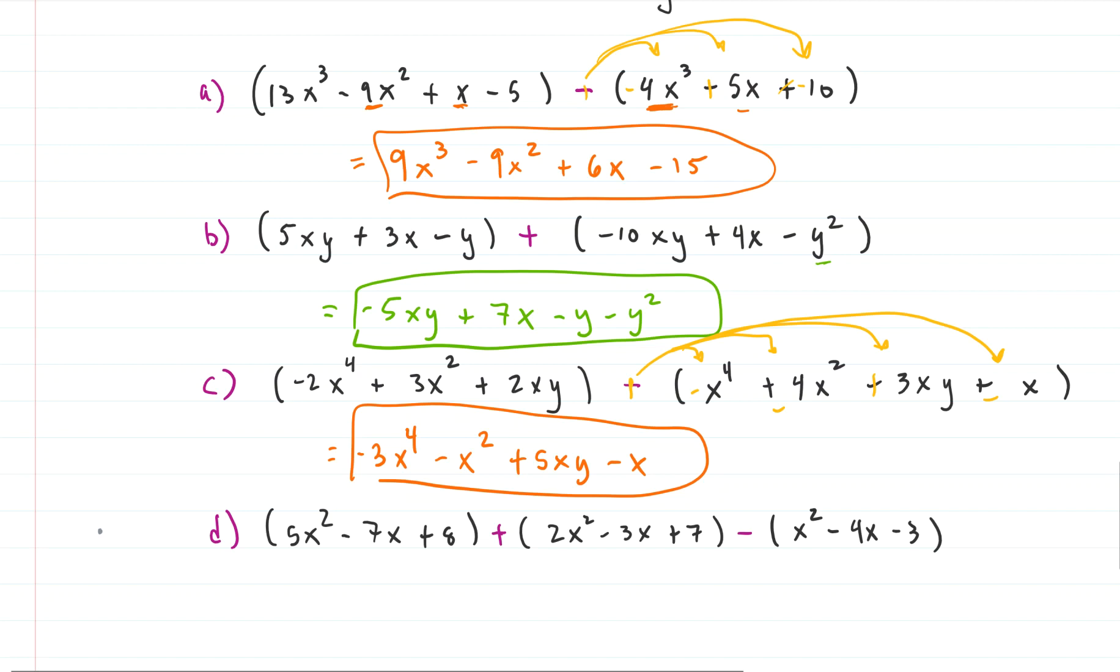Here's our last one. This is example D. And we have three polynomials we're adding together. We have the polynomial 5x squared minus 7x plus 8. And then we're adding that to 2x squared minus 3x plus 7. And then we're subtracting the polynomial x squared minus 4x minus 3. So there's nothing new here. We distribute the negative. We'll make that a plus. First term changes sign to negative. Second term becomes positive. And then the third term becomes positive. So we've distributed the negative now. And we do nothing but combine like terms.